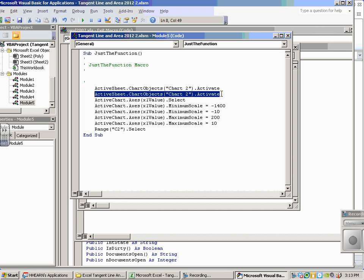Active sheet objects chart two, activate. That actually is the exact same statement, so I'm going to delete one of those. I must have clicked on it twice.